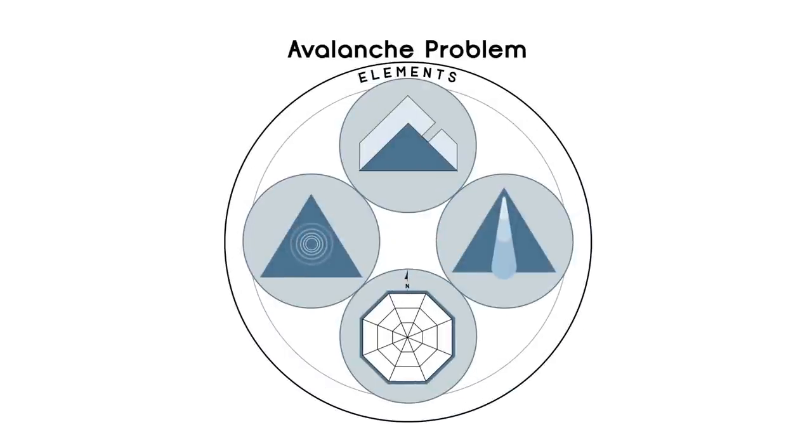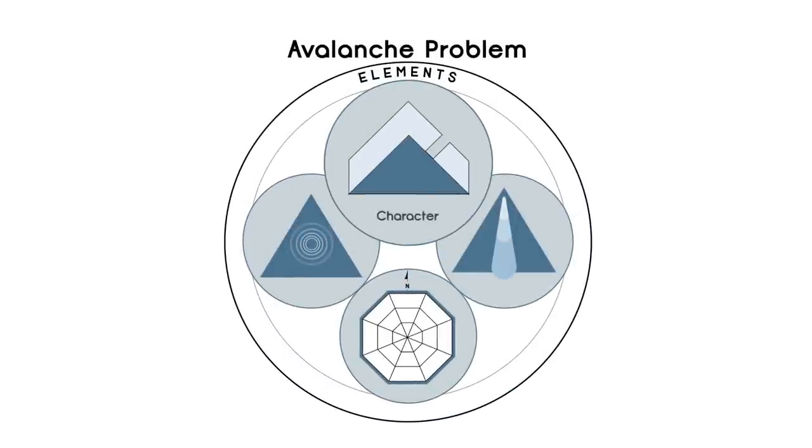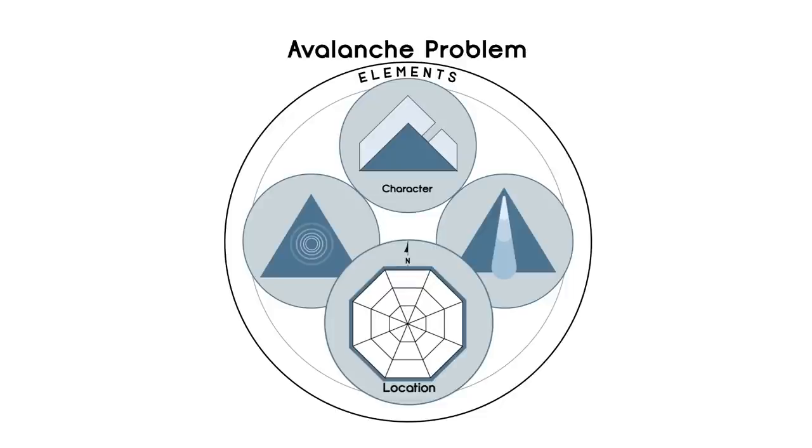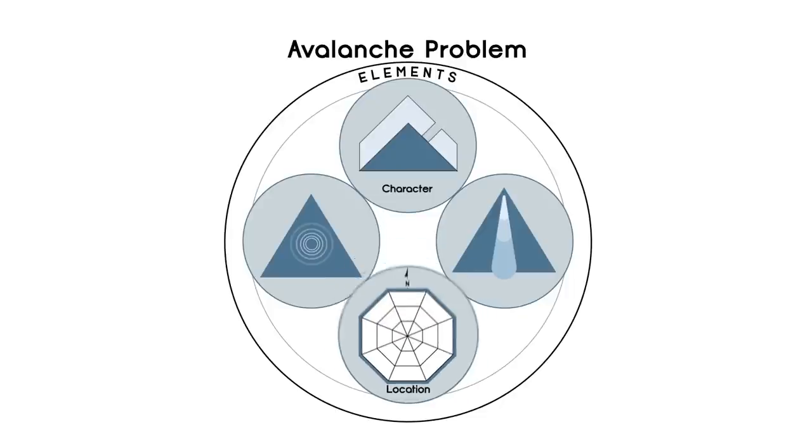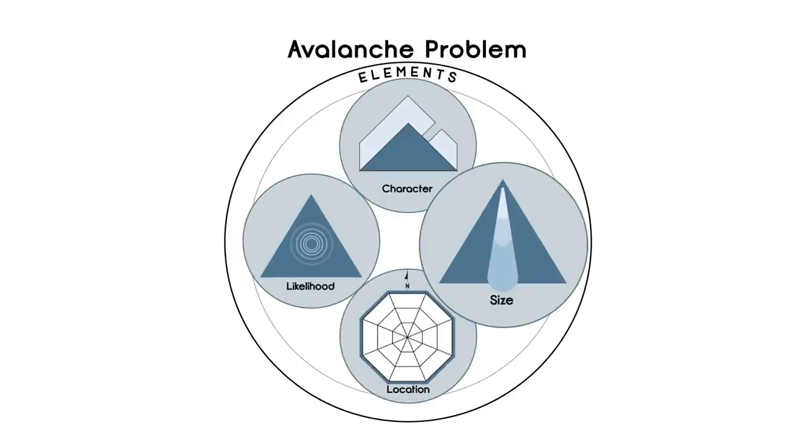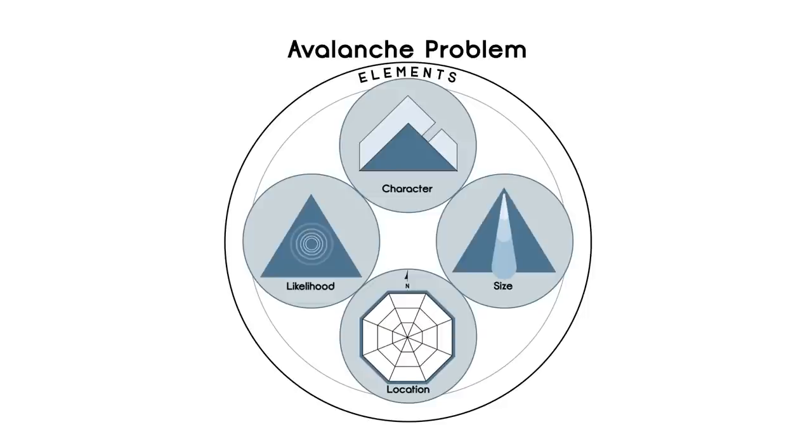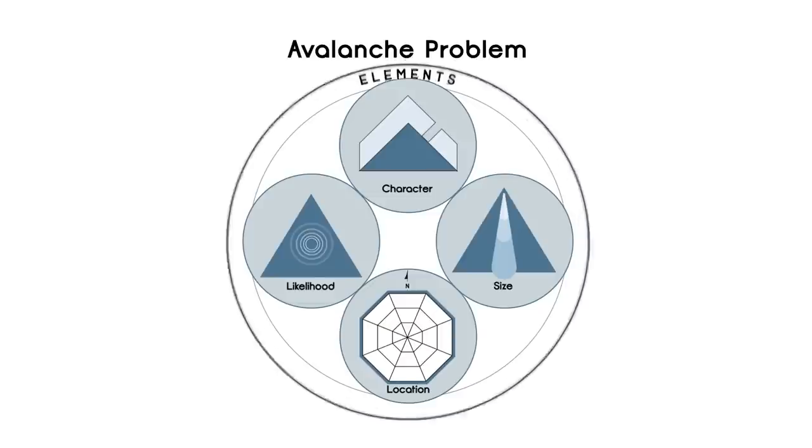Avalanche problems are defined using four elements: the kind of avalanche, where that avalanche exists in the terrain, how likely you are to trigger it, and how big it will be. These ideas are communicated by forecasters using icons and text.